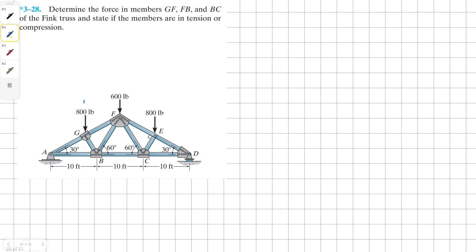To begin, as usual, we need to determine first of all the reaction at the pin connection A and roller D. Looking at this structure, we know there isn't any horizontal force acting on it. Therefore, our Ax is going to be zero.